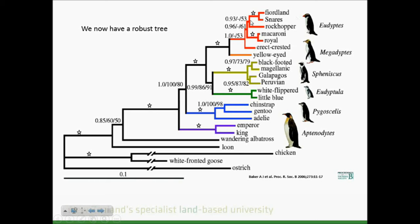Looking at this evolutionary tree for penguins: all the crested penguins in red come out together, closely allied with the yellow-eyed penguin. The South American and South African penguins are in light green, while the Fiordland, white-flippered, and little blue penguins come out in green. The small Antarctic penguins come out together and the big Antarctic penguins together. The outgroups - which aren't penguins - allow us to know where the living penguin branch connects, telling us that emperor and king penguins are probably the first lineage to diverge out of living penguins today.